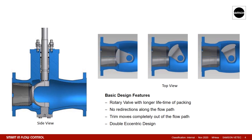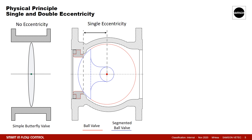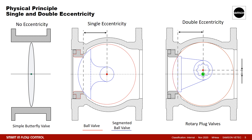Rotary plug valves by definition have a double eccentric design. A design without any eccentricity is represented by the classic low-cost butterfly valve shown on the left, where the rotation axis is right inside the middle of the plate. The image in the middle shows a single eccentric design, representing a ball or segmented ball valve, where the axis of the sealing edge is not aligned to the rotation axis. In the right image, there is an additional eccentricity — the rotation axis, marked by the red point, moves slightly out of the middle of the flow axis, highlighted in green.